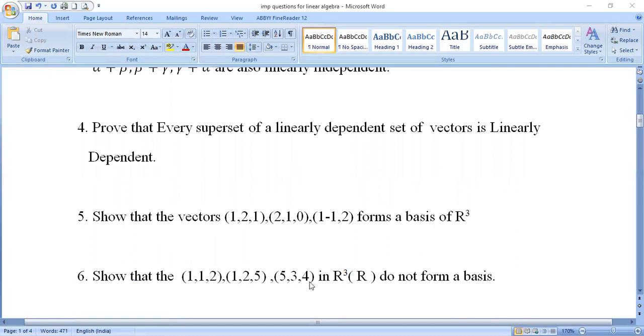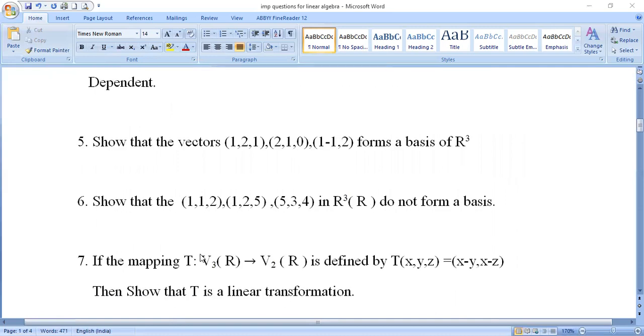Seventh question: If the mapping T maps V₃(R) to V₂(R) is defined by T(x, y, z) = (x - y, x - z), then show that T is a linear transformation. We need to show T satisfies the linear transformation conditions.